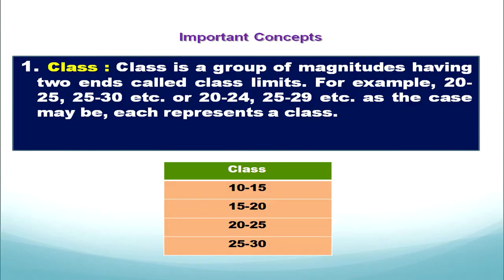Before discussing the methods of constructing frequency distribution we must know certain important concepts. These concepts are going to help us understand frequency distribution better. Let's start with the very first concept: class. What is a class? A class is a group of magnitudes having two ends called class limits.